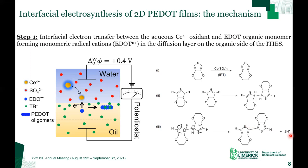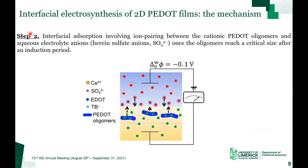These coupling steps result in the release of protons, and these protons will build up on the organic side of ITIES, and they are stabilized by the PEDOT thin film itself or by water present inside the film. In the second step, we have interfacial adsorption, involving ion pairing between the cationic PEDOT oligomers and aqueous electrolyte anions — in our case, sulfate anions — that takes place once these oligomers reach a certain critical size after an induction period. The aqueous sulfate anions displace the weakly coordinating organic TB-minus anions during interfacial adsorption, with the result being that the aqueous anions are the sole dopant in the PEDOT thin film. This deposition process is typically driven by the energetically favorable reduction of the interfacial tension between the two liquid phases upon monomer adsorption.